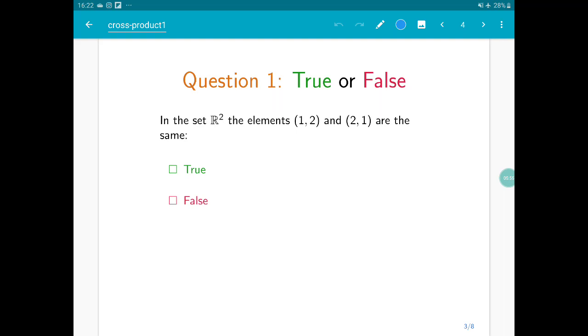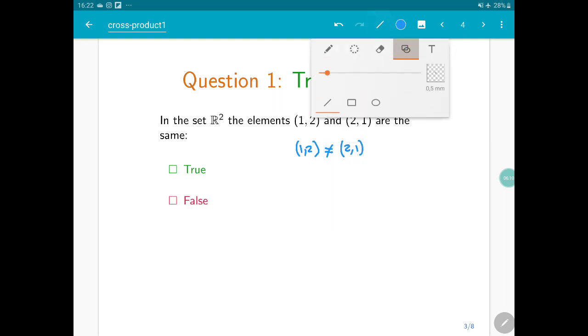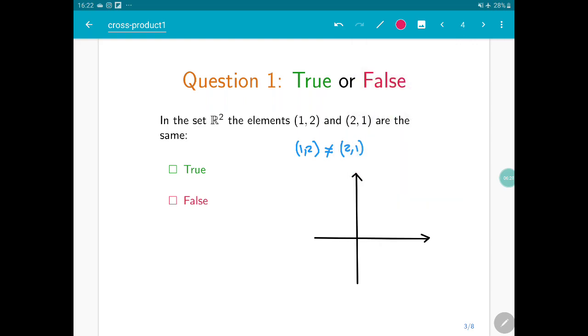Well, as I said before, these two elements (1, 2) and (2, 1), they are different. And this can be seen very well geometrically, because if we consider again the real plane, when we consider the element (1, 2), this is the element with x coordinate 1 and with y coordinate 2. So it will be this point (1, 2).